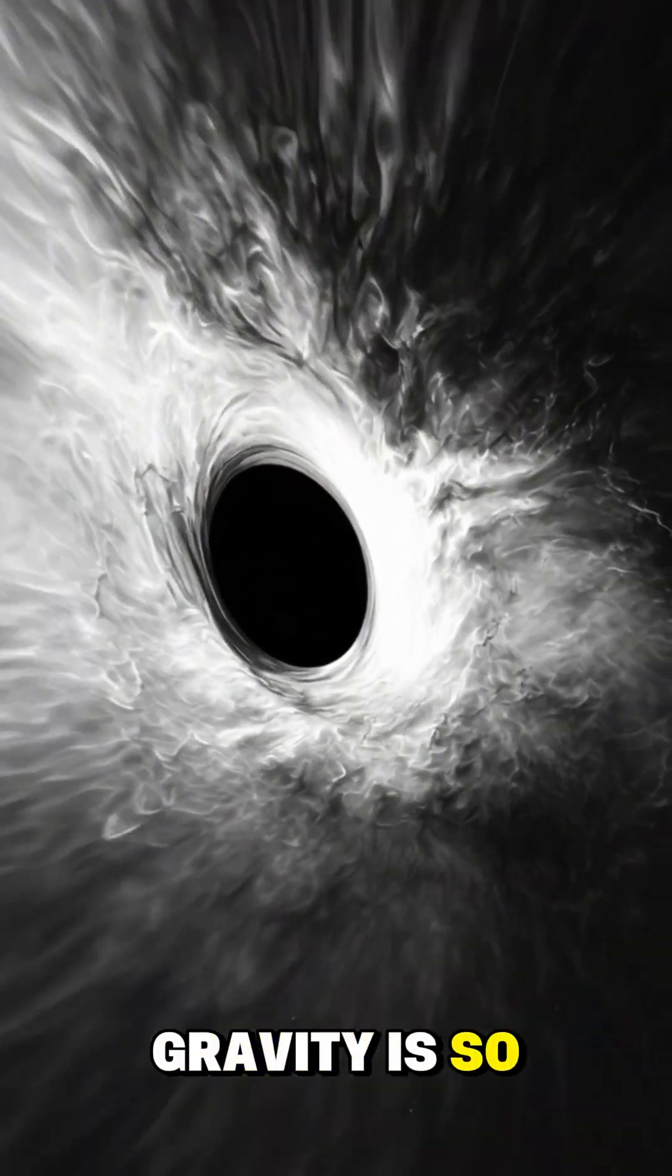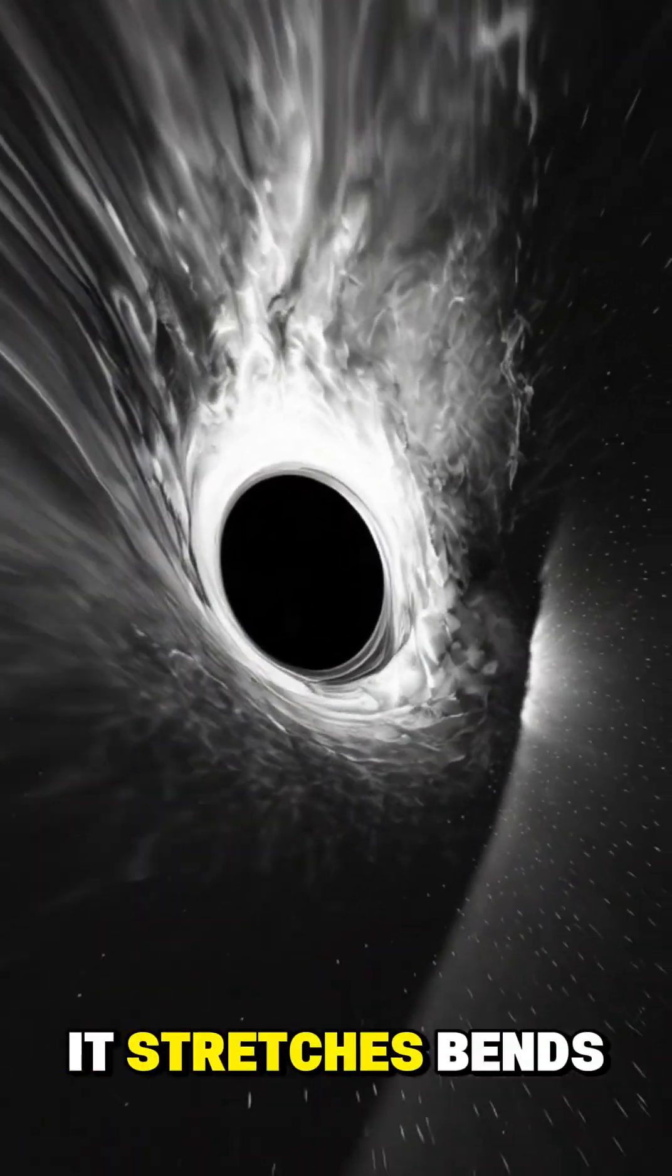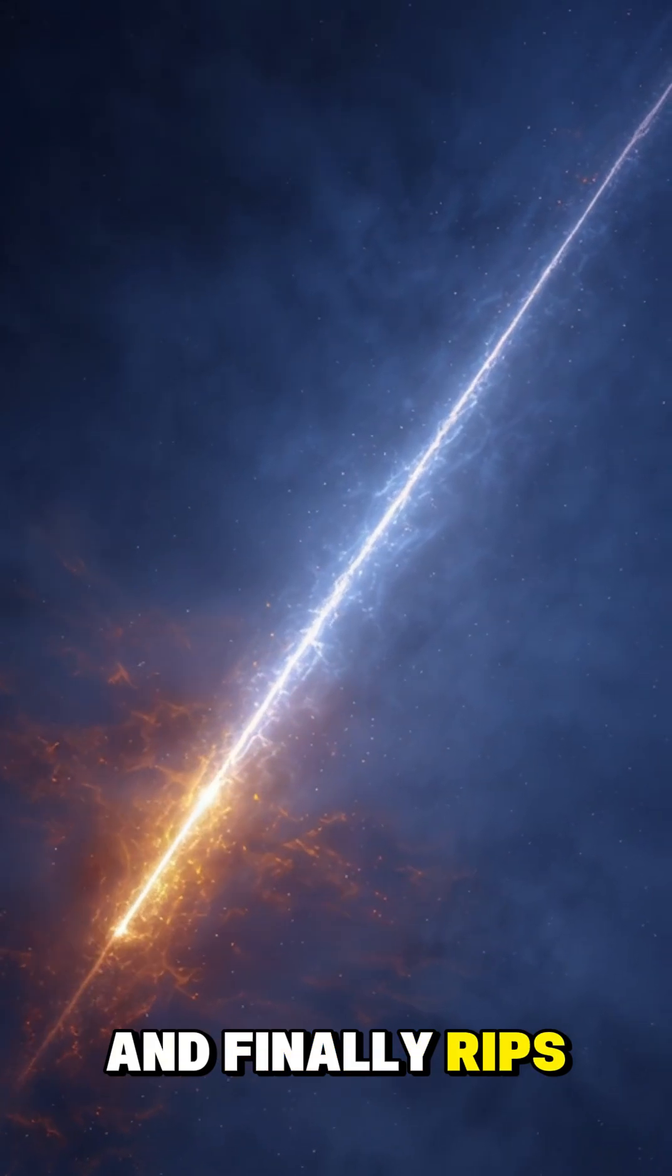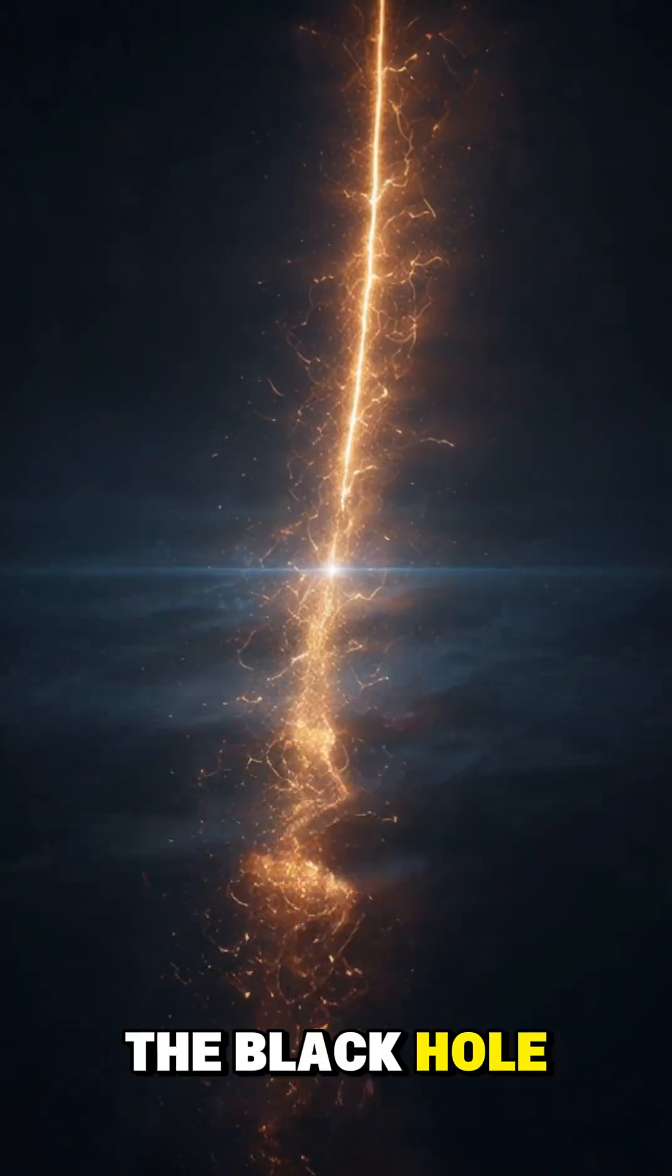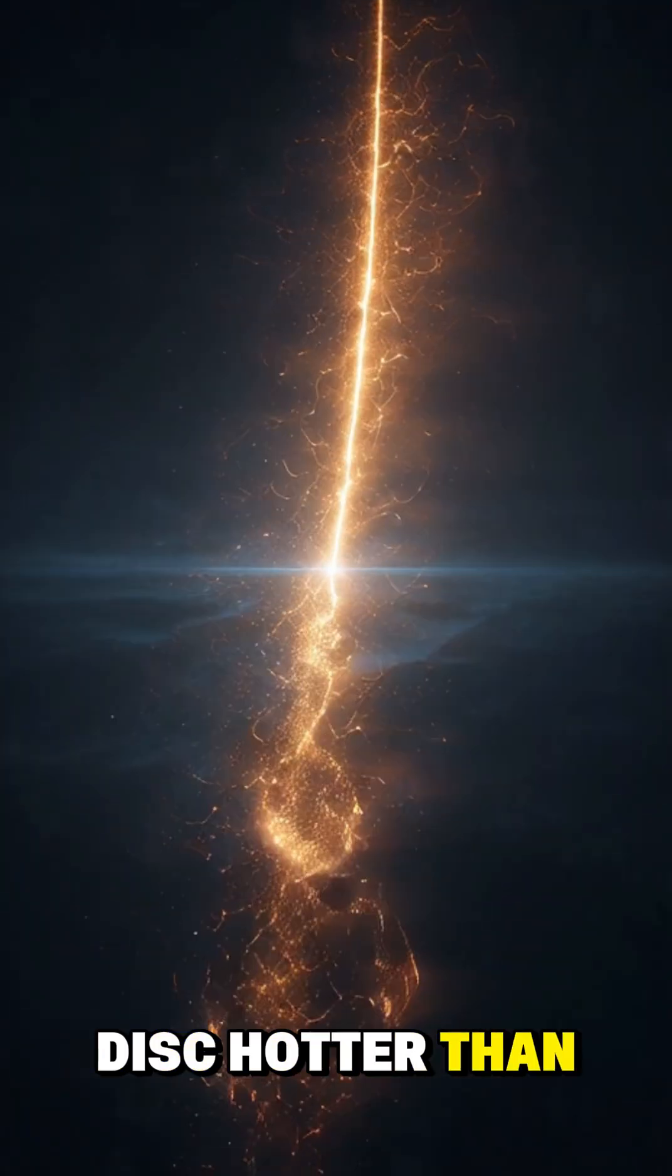The black hole's gravity is so intense that as the star gets closer, it stretches, bends, and finally rips into pieces. The outer layers are pulled in and spiral around the black hole, forming a glowing disk hotter than millions of degrees.